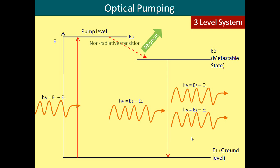This has given us our desired population inversion for the next step, and amplification of the light signal can now occur. However, this system requires a lot of power, as the population inversion means that more than 50% of the atoms need to be raised to the pump level. The system can be made more efficient by adding another level, making a four-level laser.